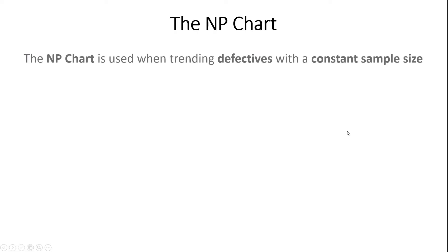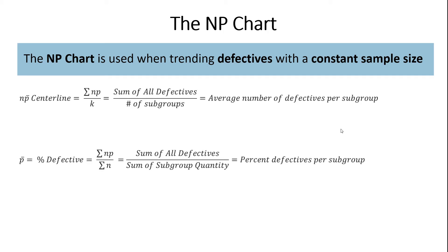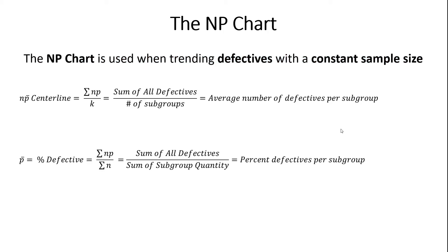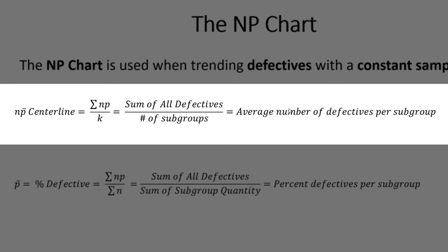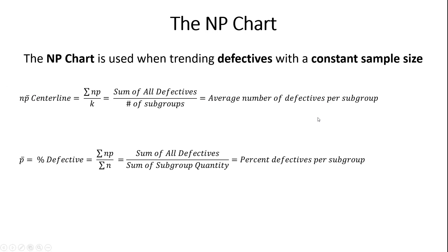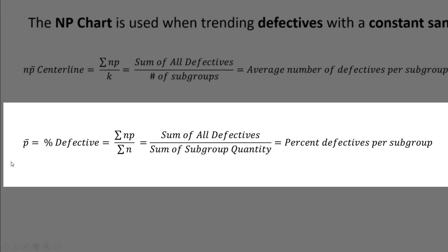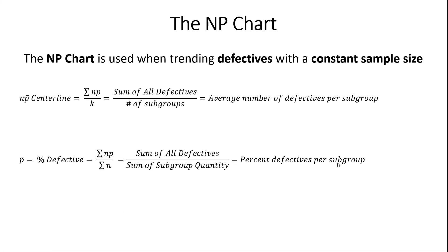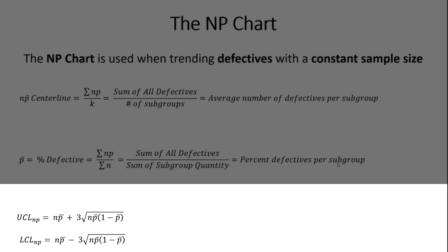Let's start with the NP chart. We use the NP chart when we're trending defective items with a constant sample size. There are two variables to calculate to complete the control chart. The first is the center of our process, called NP bar — the average number of defective items per subgroup. The second is P bar, the percent defectives per subgroup. Once we have those two parameters, we can calculate the control limits. The upper control limit is NP bar plus three times the square root of NP bar times one minus P bar, and the lower control limit uses minus instead of plus.